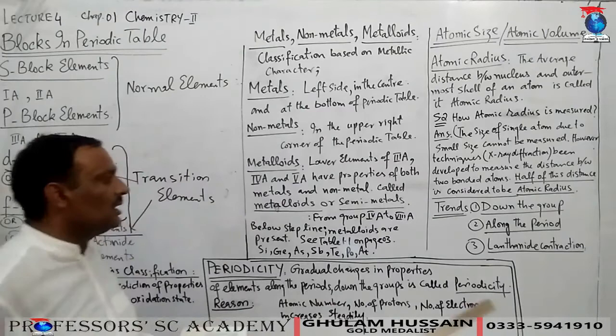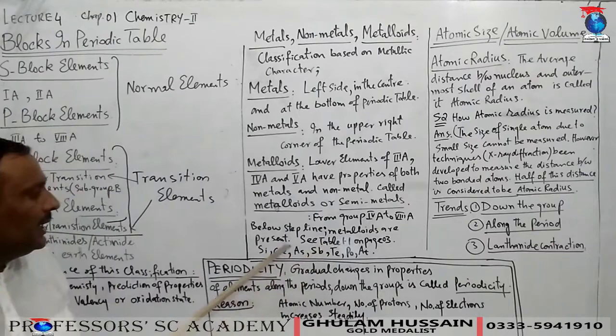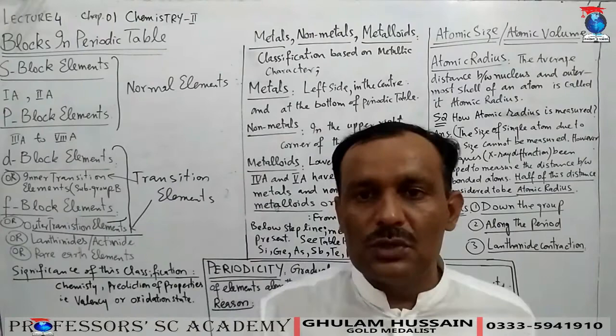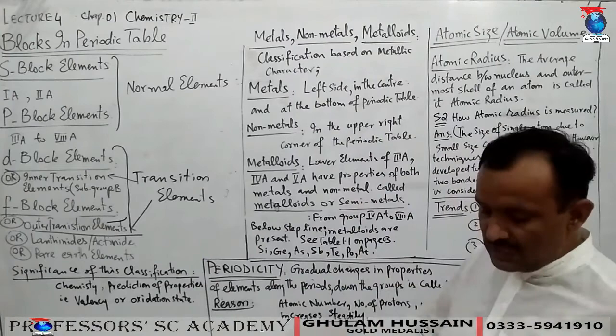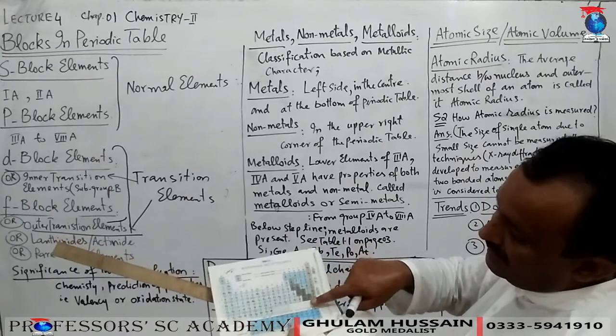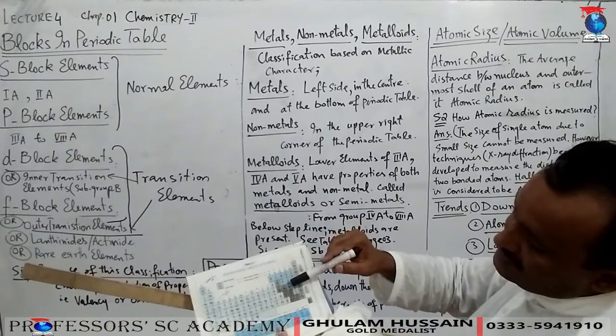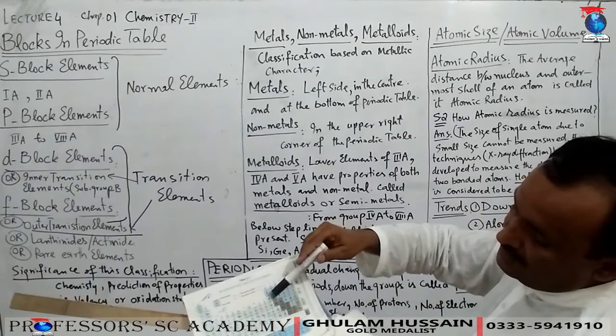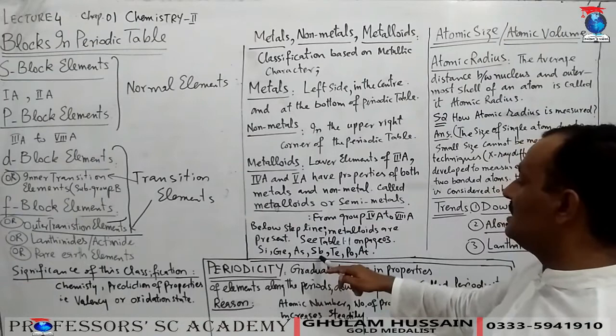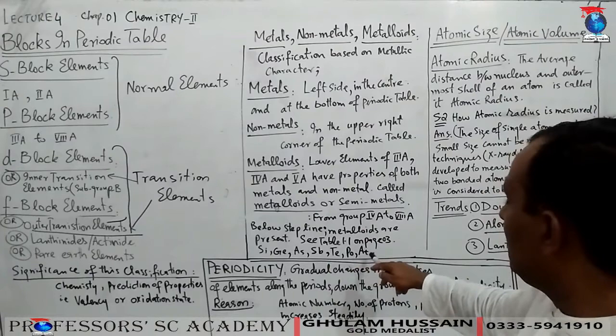Metalloids are present from group 4A to 8A, below the step line. Below the step line, we find arsenic, antimony, tellurium, and polonium — these metalloid elements are all available there.